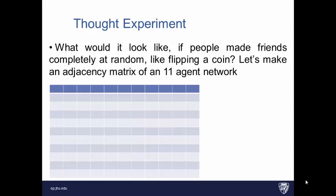So here's a thought experiment. What would it look like if people made friends completely at random, like flipping a coin? So I've made an adjacency matrix here of an 11-agent network, and I'm going to ask you to pause the video and find a coin and flip the coin. It doesn't really matter if heads are a one or tails are a one, but I would like you to just sketch this. You're basically randomly creating an adjacency matrix by flipping a coin. So when you flip a head, you'll put a one in the square, you go to the next square, flip a coin. If it's a head, you put another one. If it's a tail, you put a zero. So please pause the video and complete that exercise.